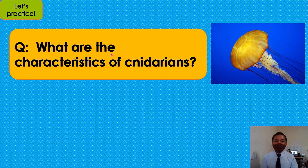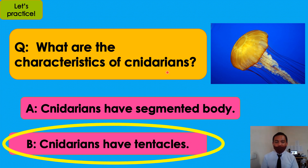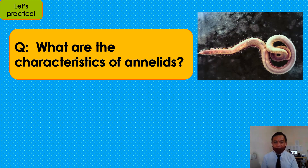What are the characteristics of cnidarians? What's your answer? I will give you five counts: one, two, three, four, five. The answer is B — cnidarians have tentacles.